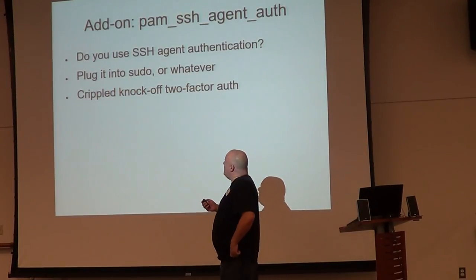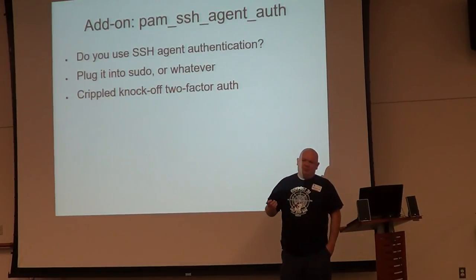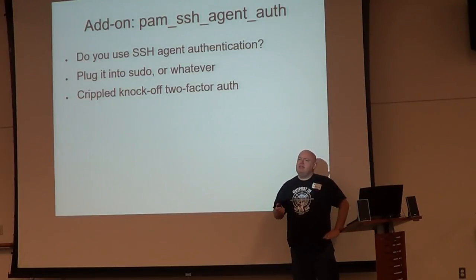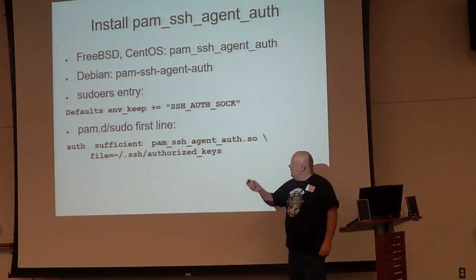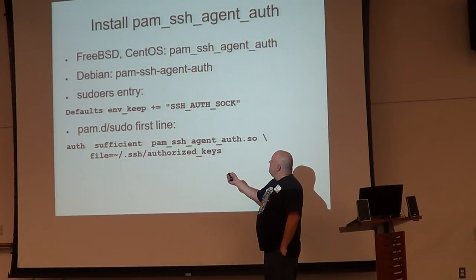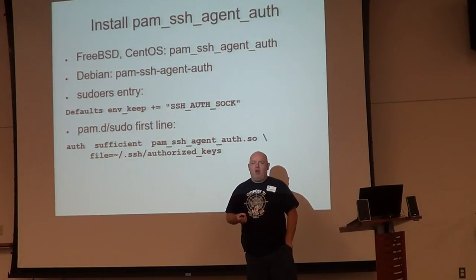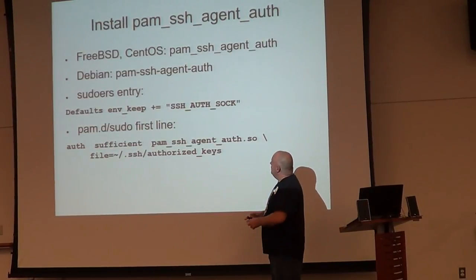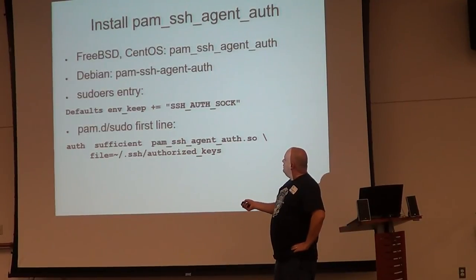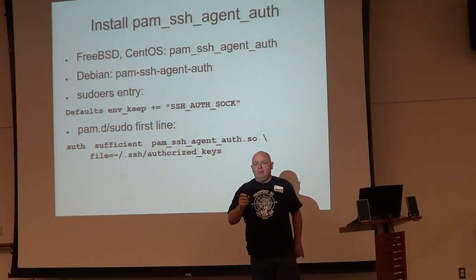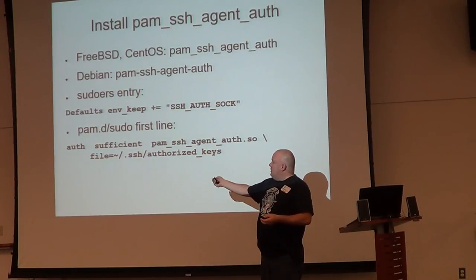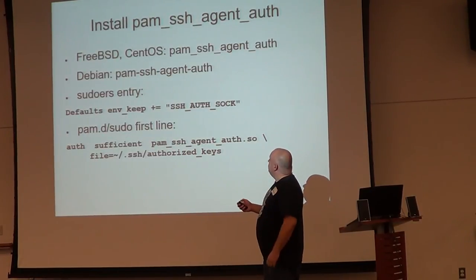And this is kind of a crippled knockoff two-factor authentication — something you have is not really a file on your system, but it is good for certain use cases. FreeBSD, CentOS, and Debian all have it. Your sudoers will need an environment keep statement — keep my SSH authentication socket in the environment so I can find my SSH agent to query it. Then put in a sufficient statement in your PAM policy. If you want to use only SSH agent authentication, you make this first. If you want to use password and SSH agent, you might make this required. Whatever fits your environment.